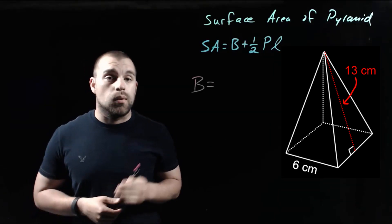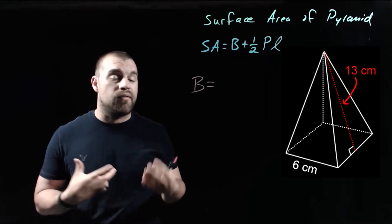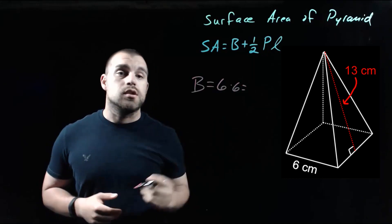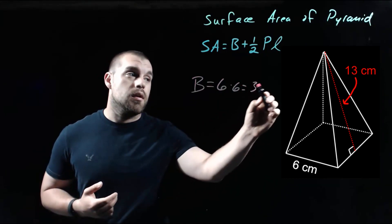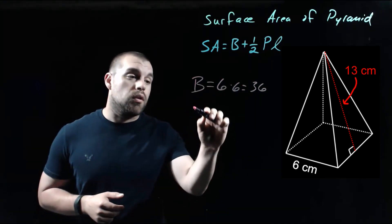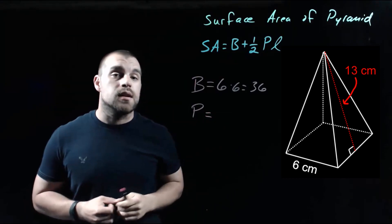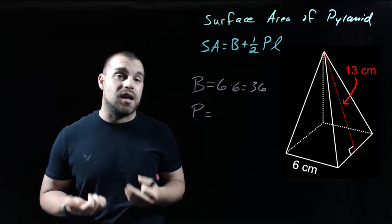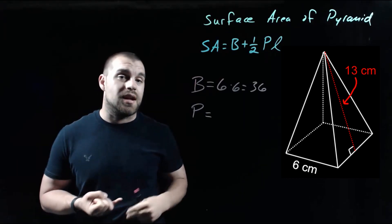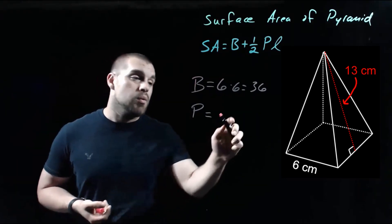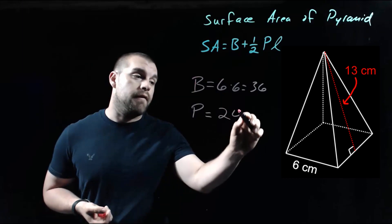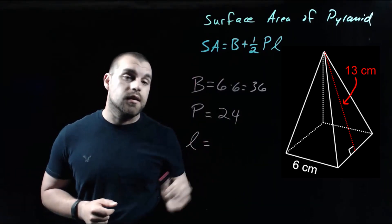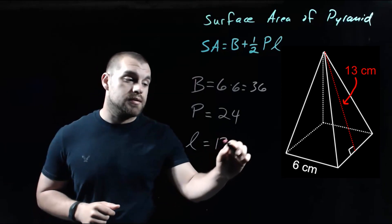In order to find that area, we're going to take length times width — six times six — so we end up with an area of the base equal to 36. Now if we're looking at the perimeter of the base, this is a square so it's got four sides, all six centimeters long. So six plus six plus six plus six gives us a perimeter of 24. And our slant height is the 13 that's given to us.